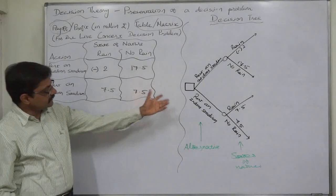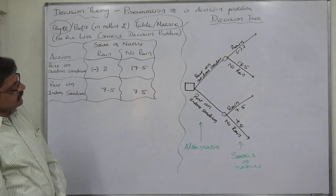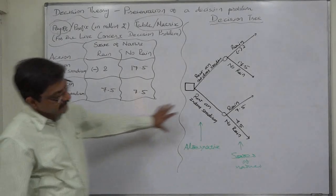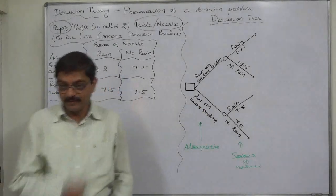So these are the two ways of presentation of a decision problem, payoff matrix and decision tree. That's it, thank you very much.